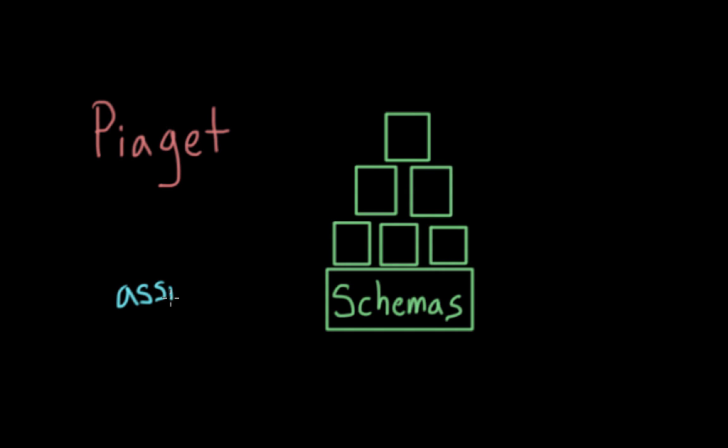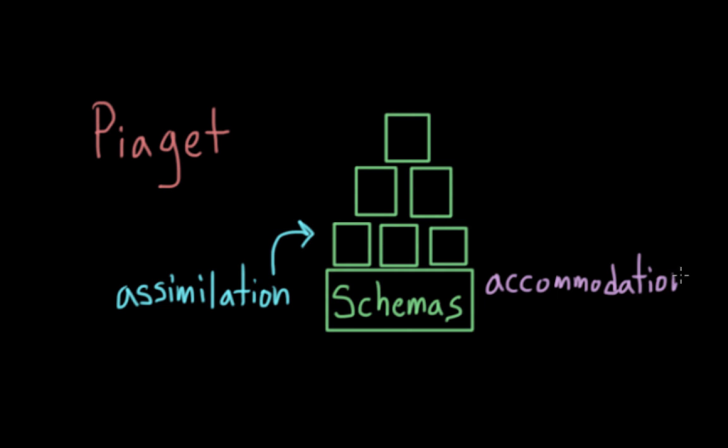Assimilation describes how we interpret new experiences in terms of our current understanding, so in terms of our current schemas. Accommodation describes how we later adjust our schemas to better incorporate new experiences.